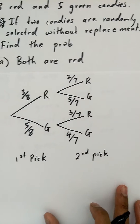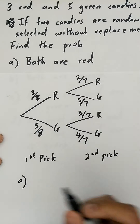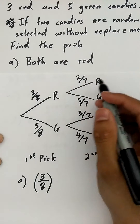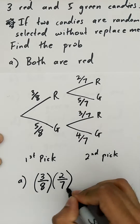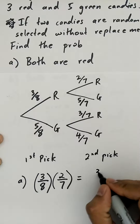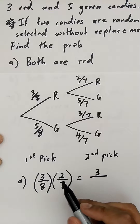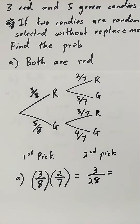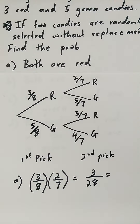For Part A, what is the probability that both are red? The probability of the first red is three out of eight, and the probability of the second red is two out of seven. Multiplying them together gives three over twenty-eight, which as a decimal is approximately 0.107.